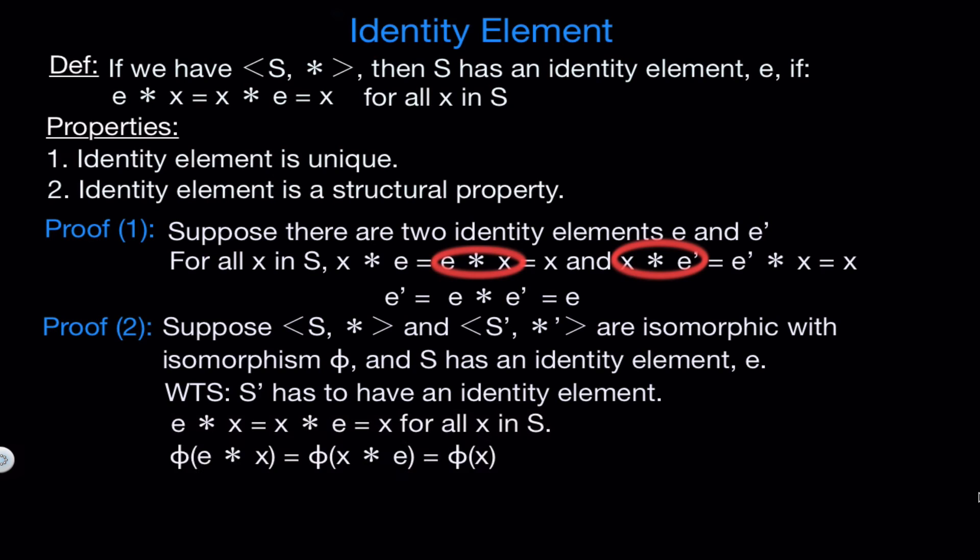Then we can use our map phi to see what these elements of S get mapped to in S'. Doing this, we get that phi of e star x equals phi of x star e which equals phi of x, and that's because phi is a function. And now if we use the homomorphism property, we can change this to say that phi of e star' phi of x equals phi of x star' phi of e which equals phi of x.